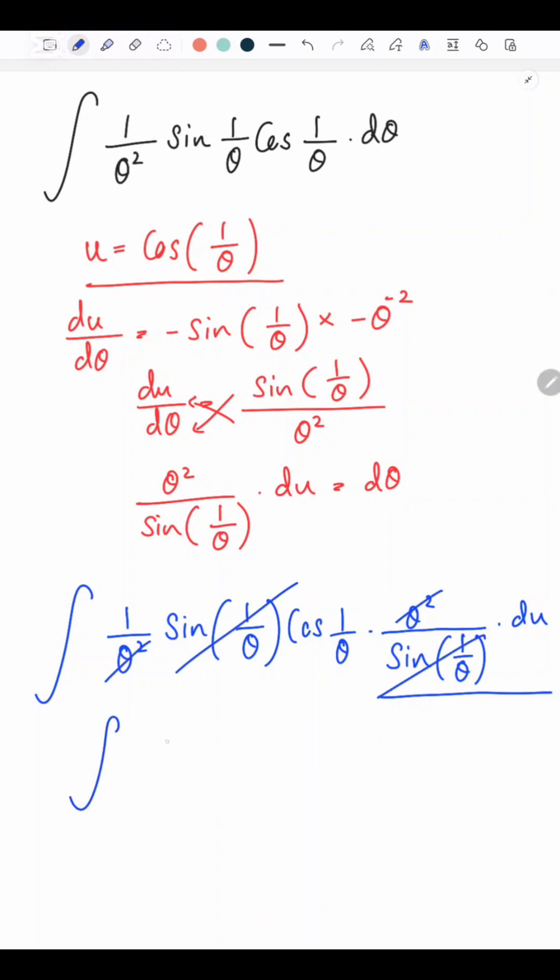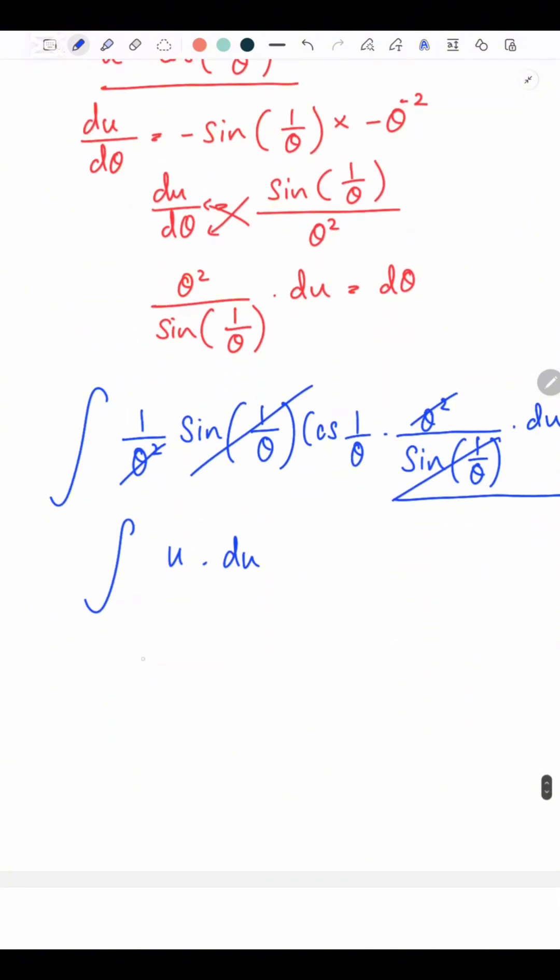So now you have the integration of cos 1 over theta was u. So it's basically the integration of u, which is u squared over 2 plus c, giving the final answer as cos 1 over theta squared over 2 plus c.